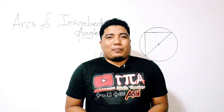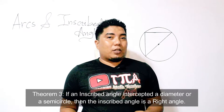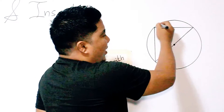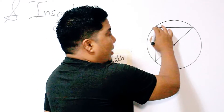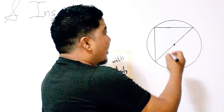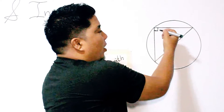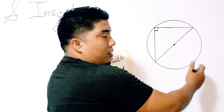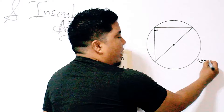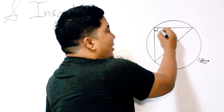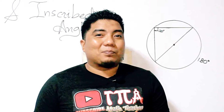Theorem number three states that if an inscribed angle intercepts a diameter or a semicircle, then that inscribed angle is a right angle. The intercepted arc is a semicircle measuring 180 degrees, and half of 180 is 90 degrees — which is a right angle.